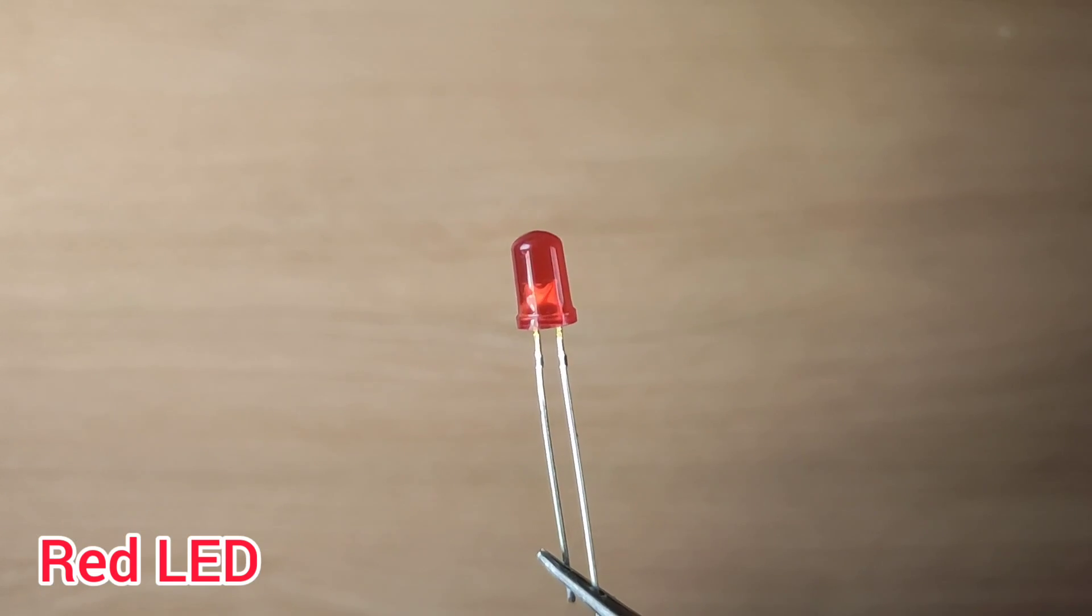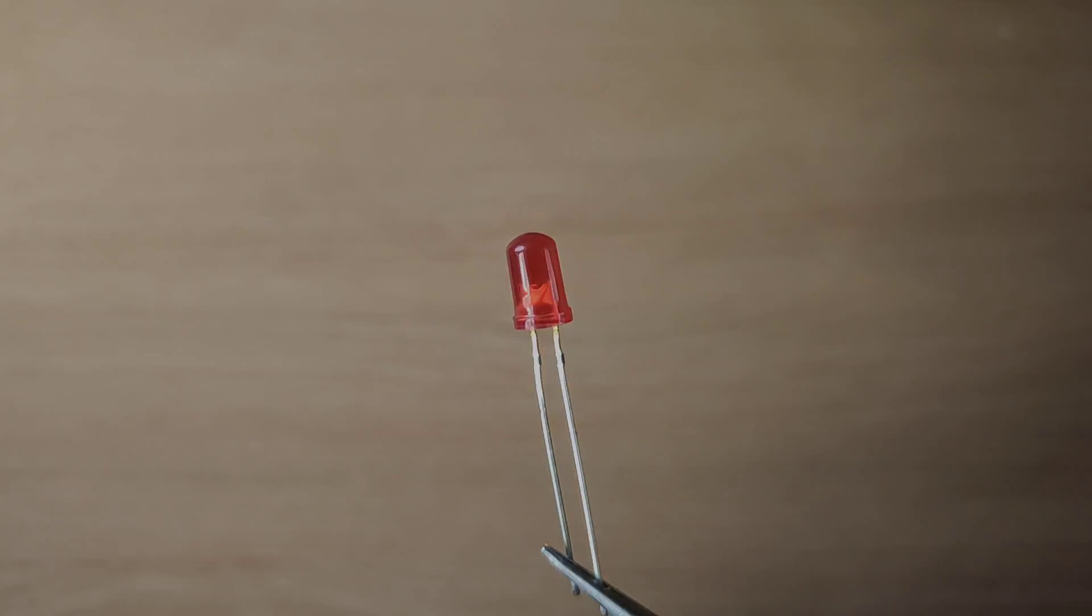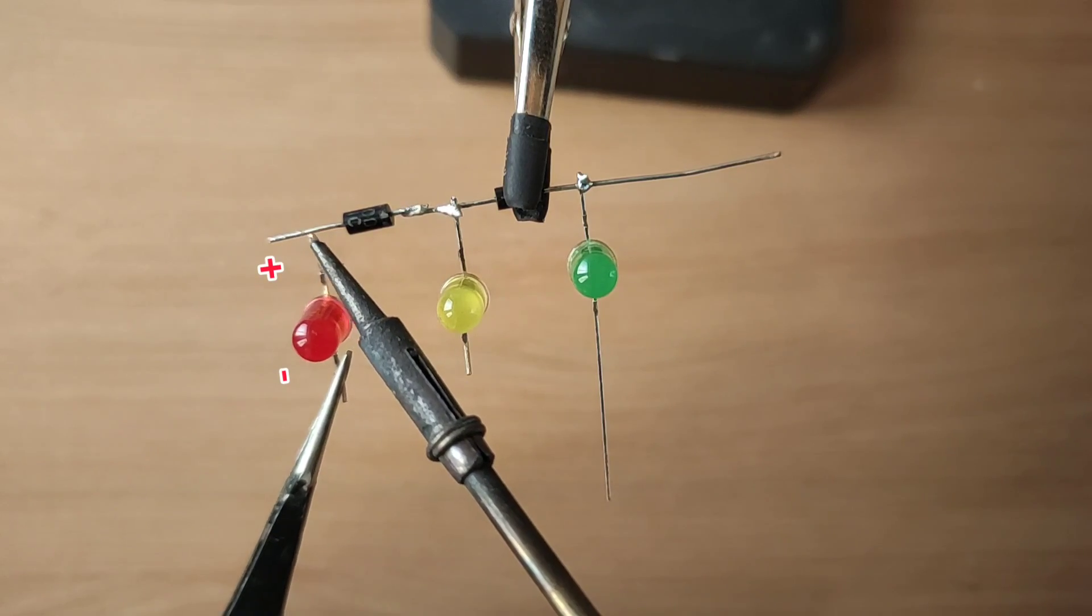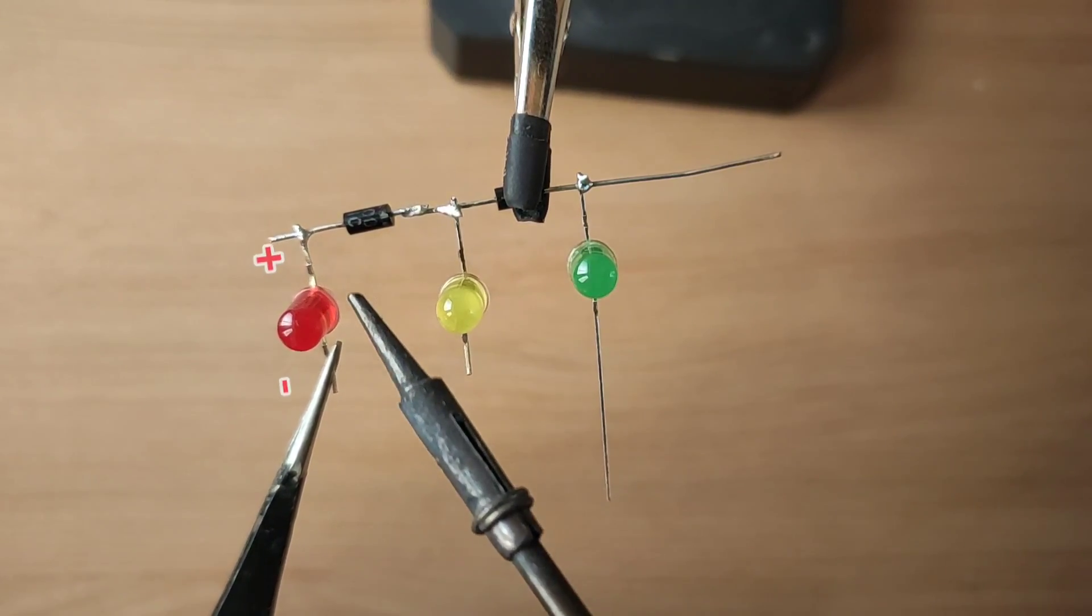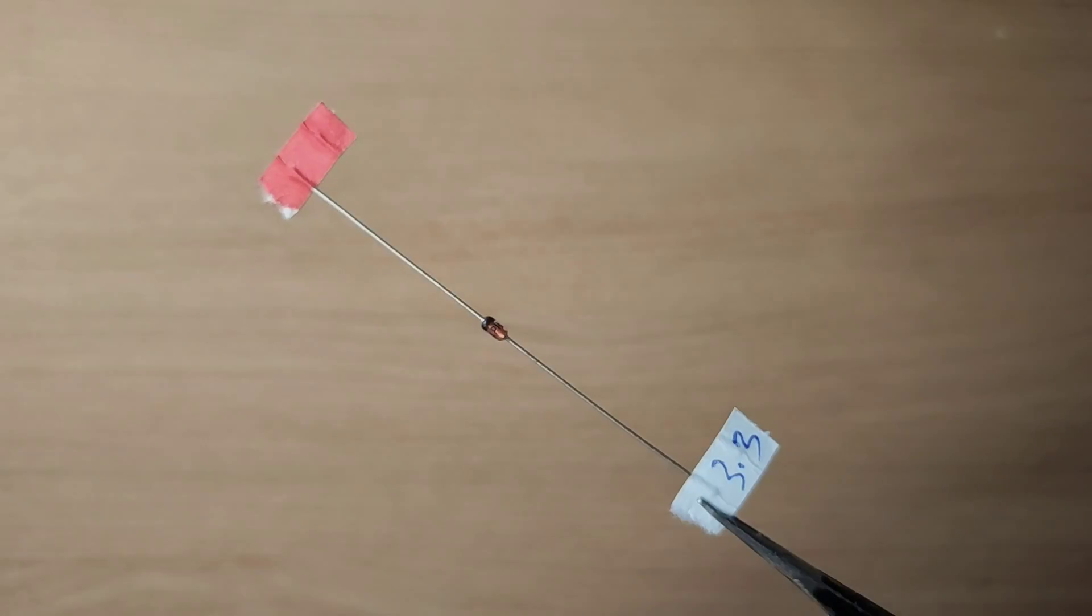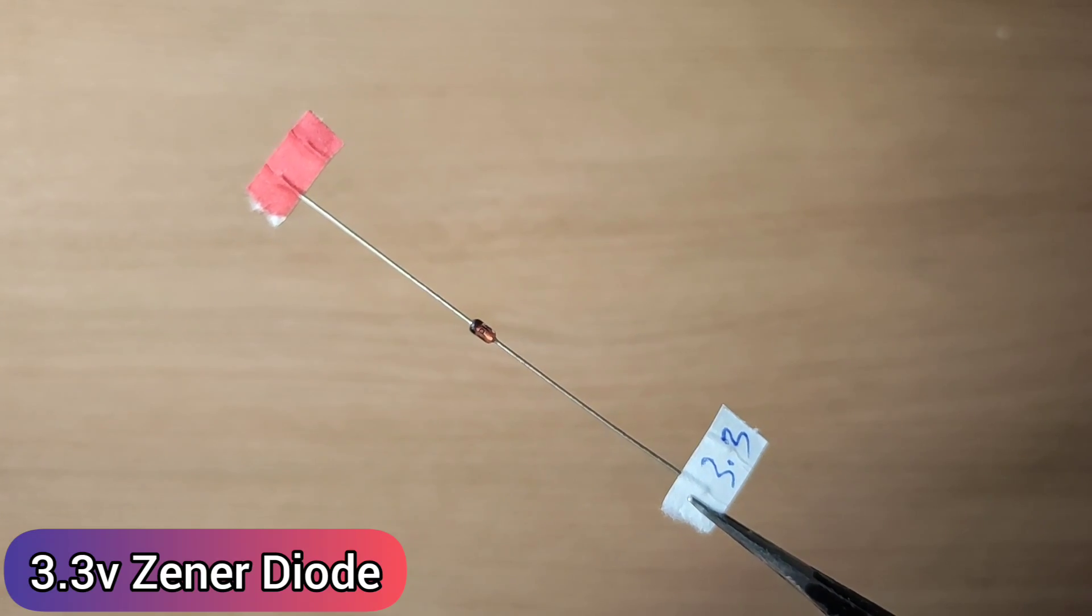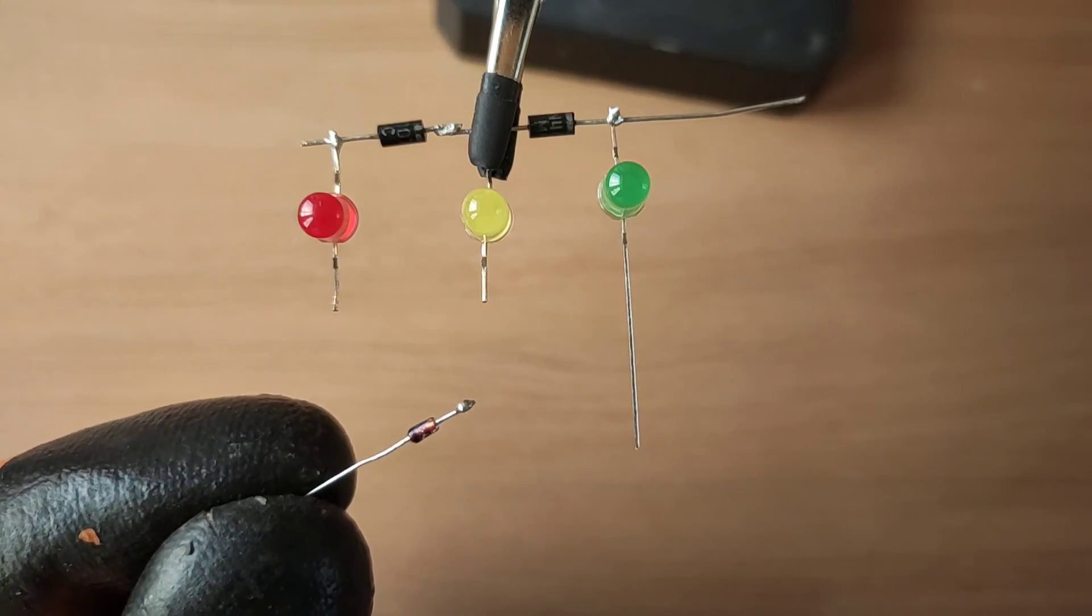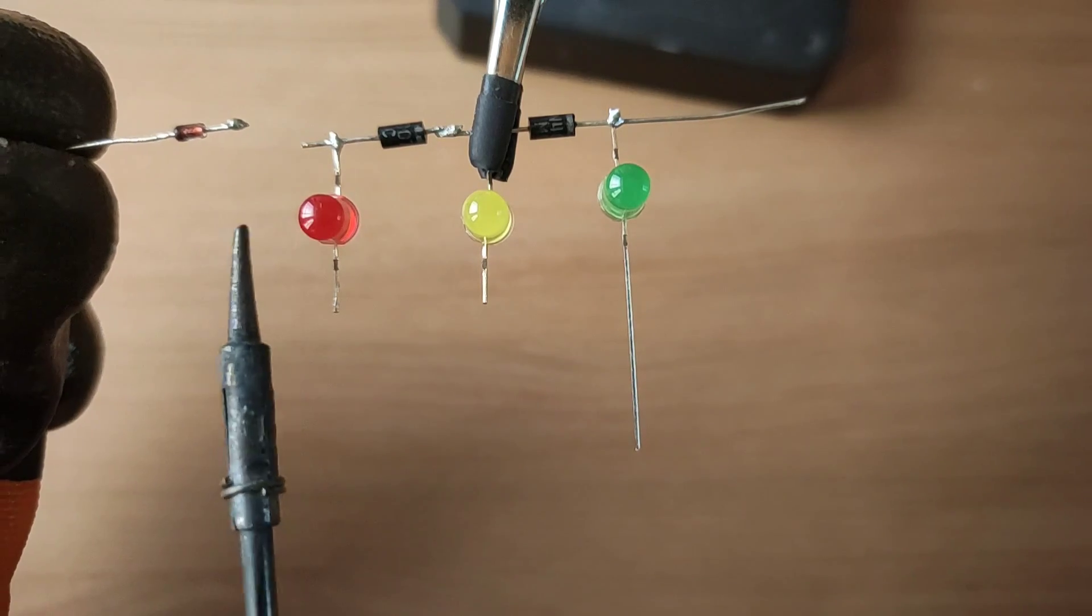Now take red LED. Solder red LED positive with diode's anode. Take 3.3 volt Zener diode. Solder anode to red LED positive.